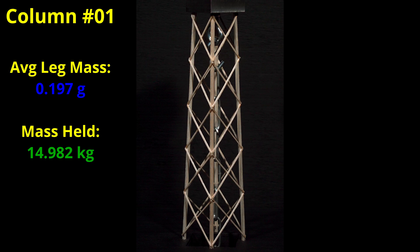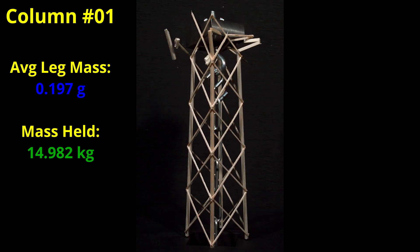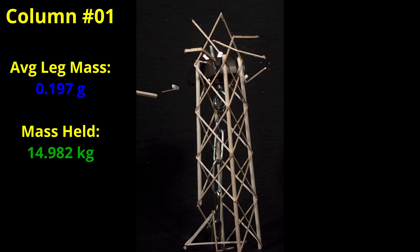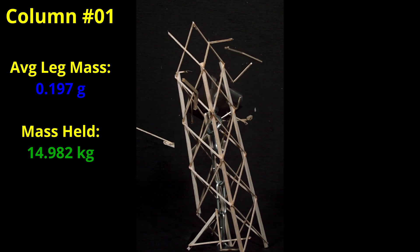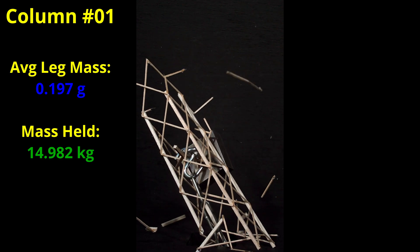I will spare you the live video for each one of these columns and jump directly into the high speed footage to see what we can learn. Here is column number one that had a total leg mass budget of 0.789 grams. That puts the average leg mass at 0.197 grams. We can clearly see that there was a leg failure at the top. What was surprising to me was that this column held nearly the full load at 14.982 kilograms.